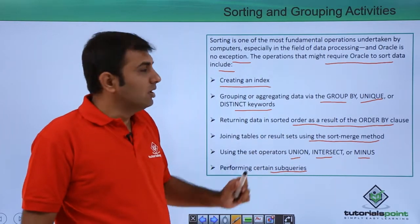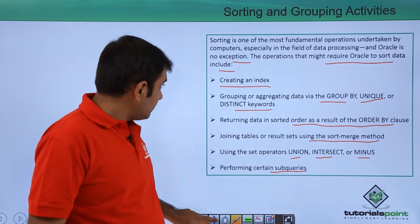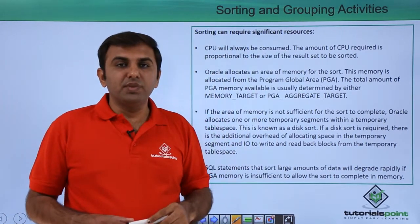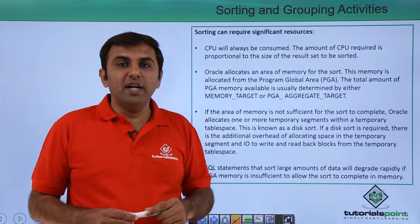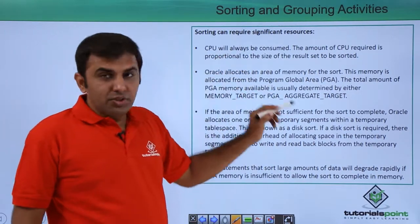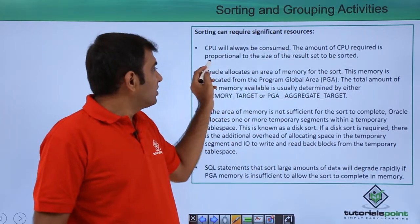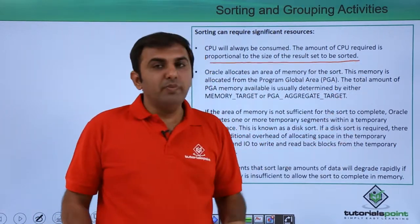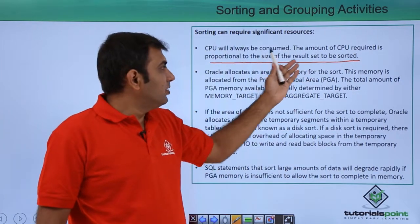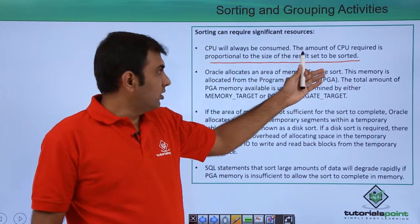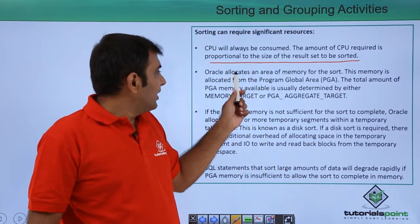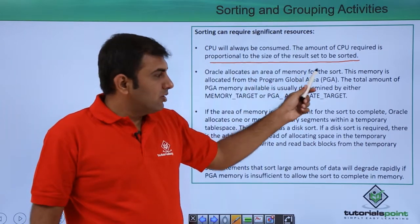And performing certain subqueries — at that time the sorting operation is also done. Sorting can require significant resources. Whenever you are doing sorting, significant memory resources are required. CPU is always consumed, and the amount of CPU required is proportional to the size of the result set to be sorted. More sorting data means more CPU consumption.